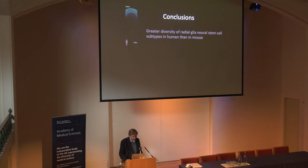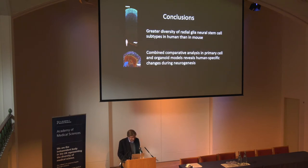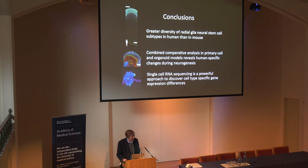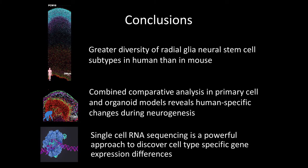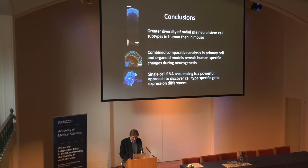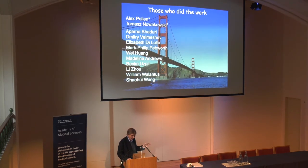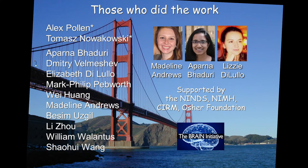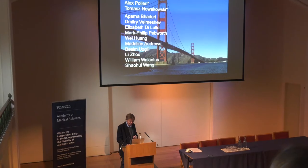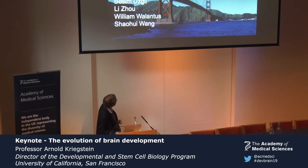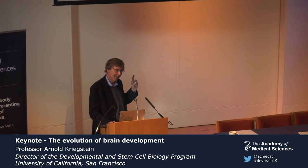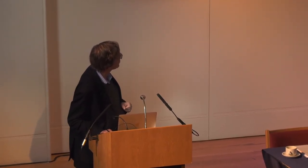In conclusion: there's a greater diversity of radial glia neural stem cell subtypes in humans than in mouse. We've been able to use combined comparative analysis of both primary and organoid models to study evolution, and increasingly also to study diseases. The single-cell sequencing technology, which has really developed in the last decade, has revolutionized our approach to understanding the composition and function of cell types in brain development. Key contributors include Alex Pollen and Tom Nowakowski, who were critical for single-cell sequencing and have both started their own labs at UCSF, as well as postdocs Madeline Andrews, Aparna Bhaduri, and Lizzie DeLullo, and funding from the NIH BRAIN Initiative. Thank you for your attention.